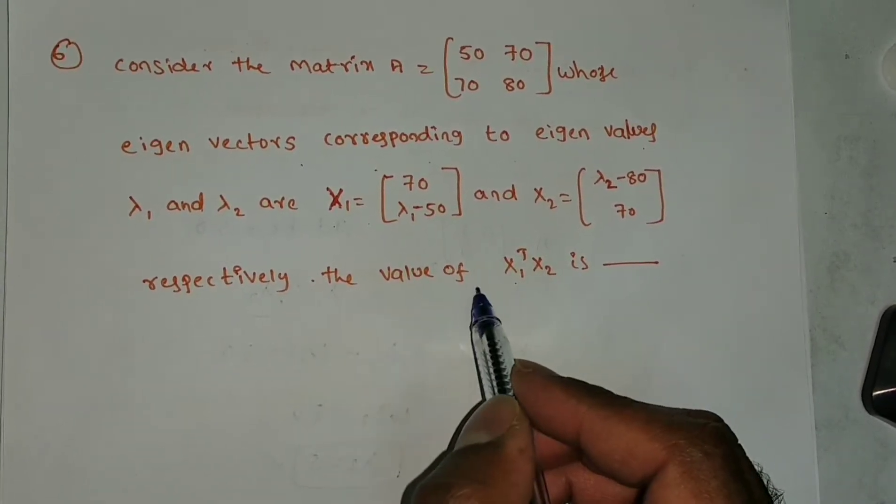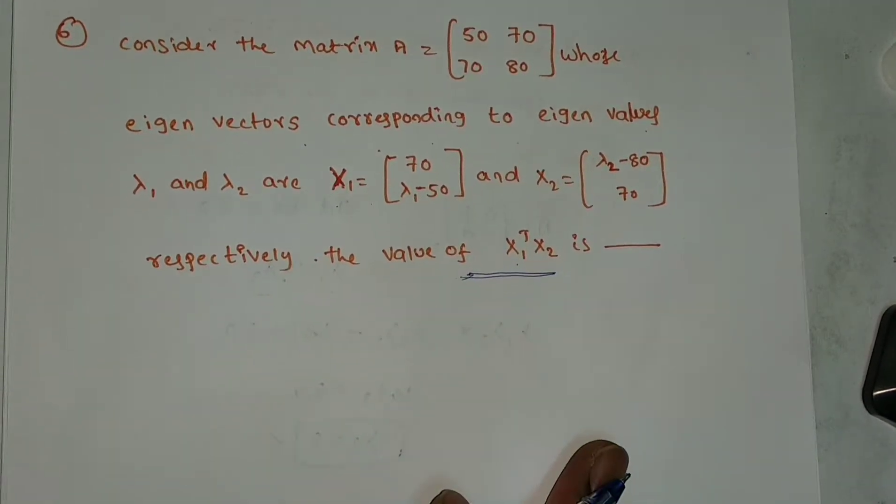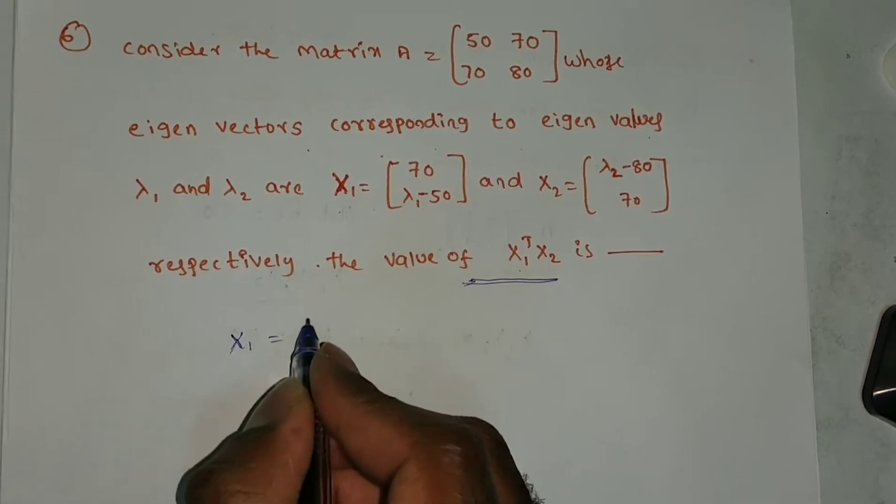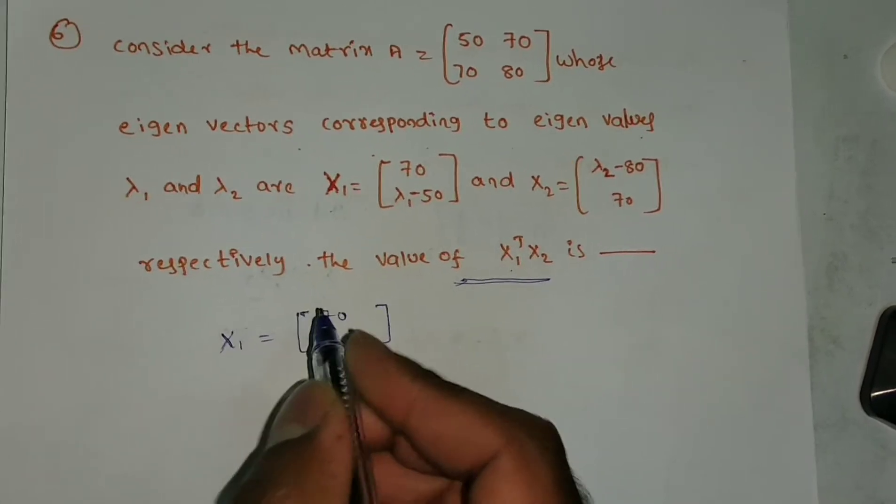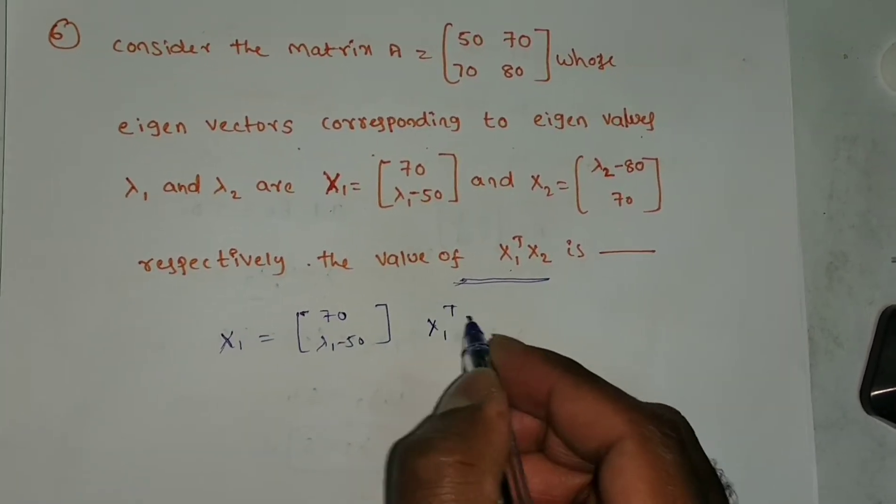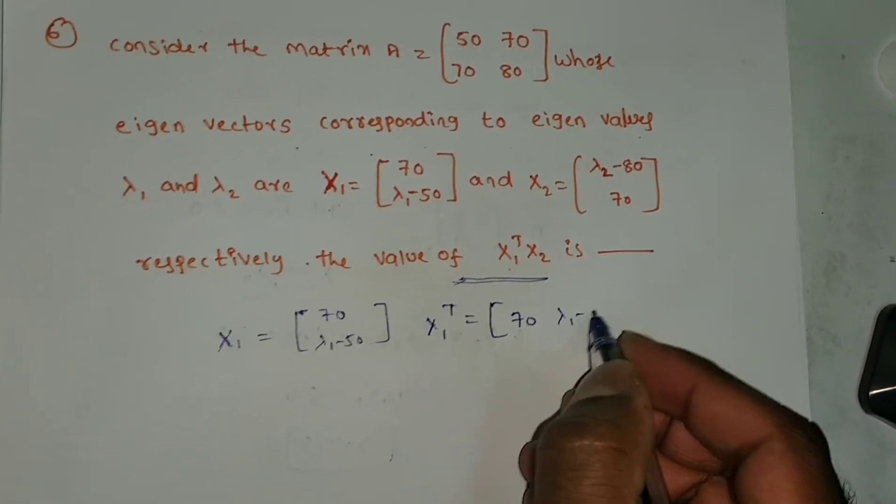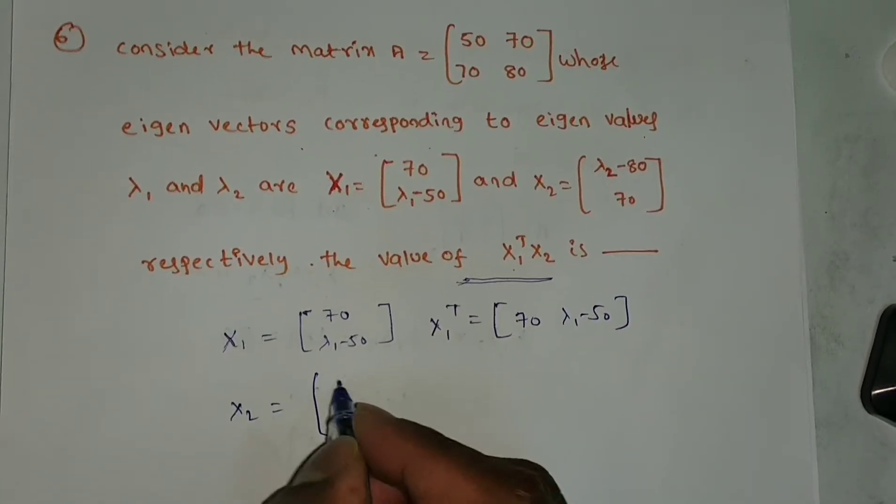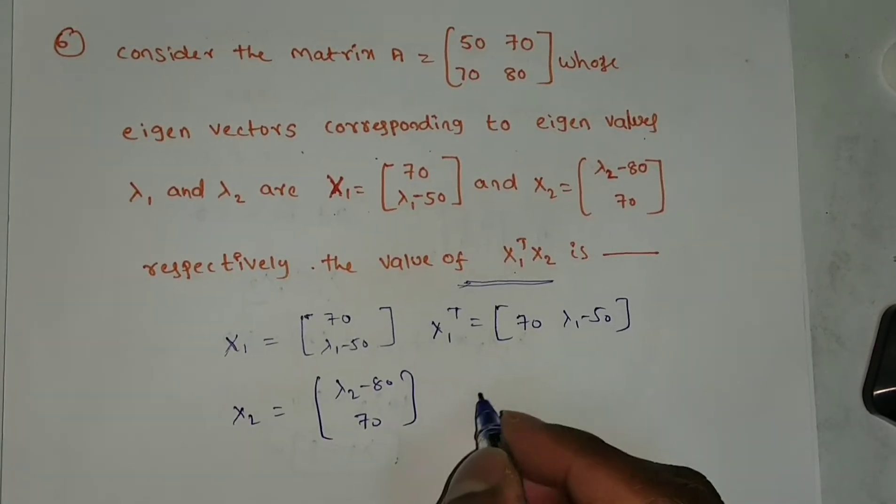Here they are asking value of x transpose Ax. Two vectors they given. x₁ vector is [70, λ₁ - 50]. x₁ transpose is [70, λ₁ - 50]. Now x₂ vector is [λ₂ - 80, 70].